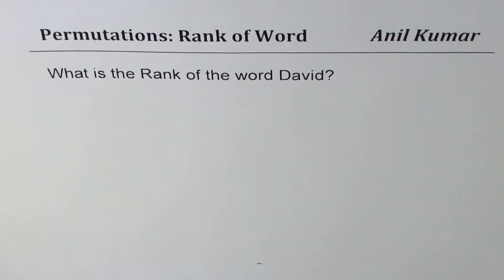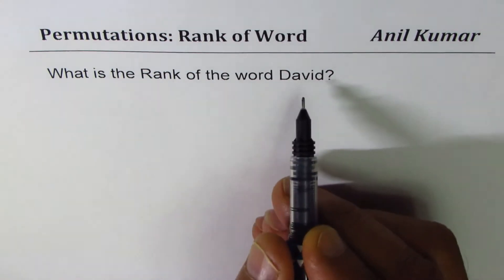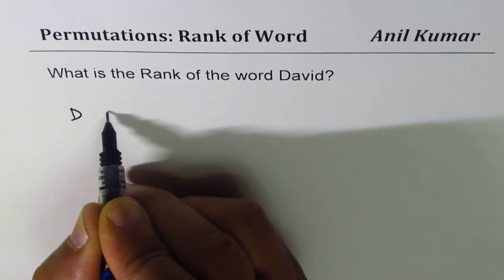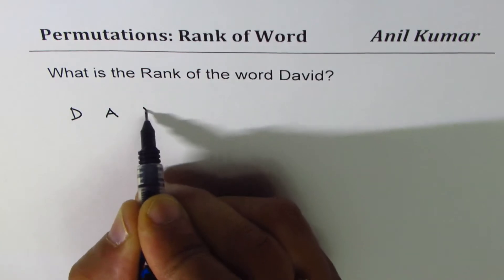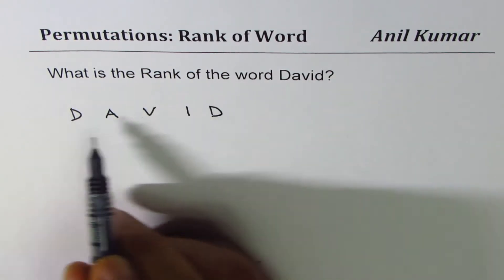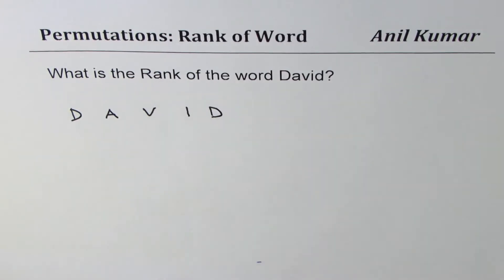I'm Anil Kumar and in this video we will understand how to find the rank of a word when the letters are repeated. The question is: what is the rank of the word DAVID? As you can see, two letters D are repeating.